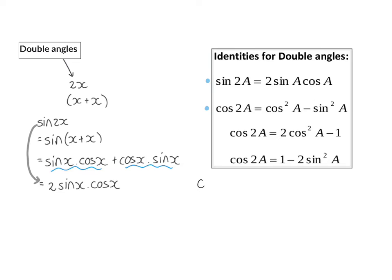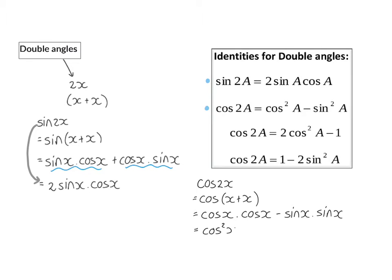If we now look at our cos double angle, cos of 2x, we can do the same thing. We can rewrite it as cos of x plus x, which can then be expanded by our compound identity: cos of the first angle multiplied by cos of the second angle, minus sin of the first angle multiplied by sin of the second angle. This gives us our double angle identity: cos squared x minus sin squared x.